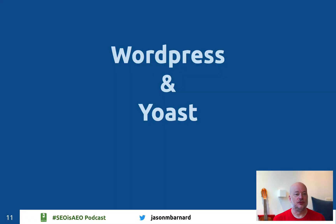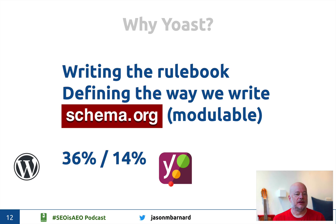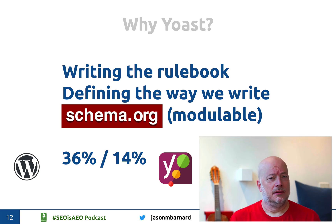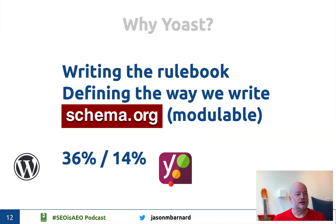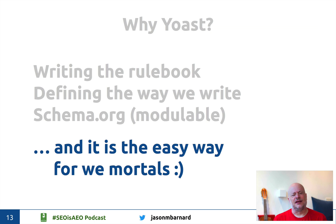For the examples I'm going to use WordPress and Yoast. Yoast are writing the rule book and defining the way we write schema markup — they've created a modular system that is incredibly powerful and fairly easy to deal with. WordPress represents 36% of the web. Google is investing heavily in WordPress — in speed, in AMP, in plugins — but not in schema markup, because Yoast are doing that and Yoast represent 14% of the web. So the way Yoast are writing schema today is the way Google will best understand it tomorrow.